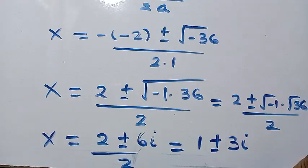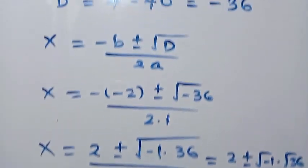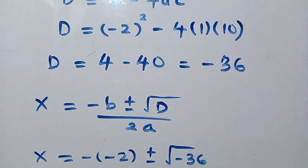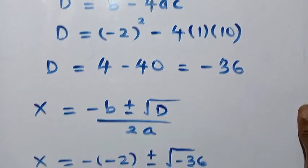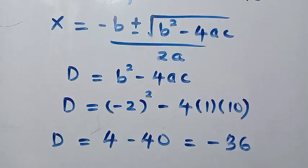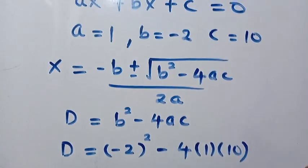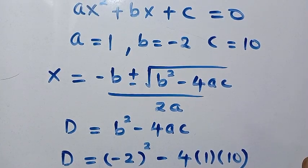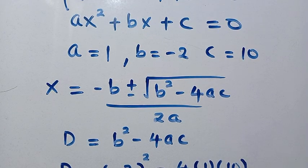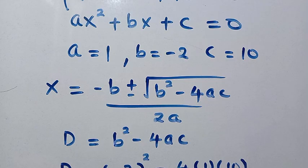So in summary, we have four solutions: x equals 4, x equals minus 2, and x equals 1 plus or minus 3i. This is how we solve this problem step by step from beginning to end. I hope you liked this video. Thanks for watching. Don't forget to subscribe to this channel, turn on the notification bell, and see you in the next class. Never stop learning.